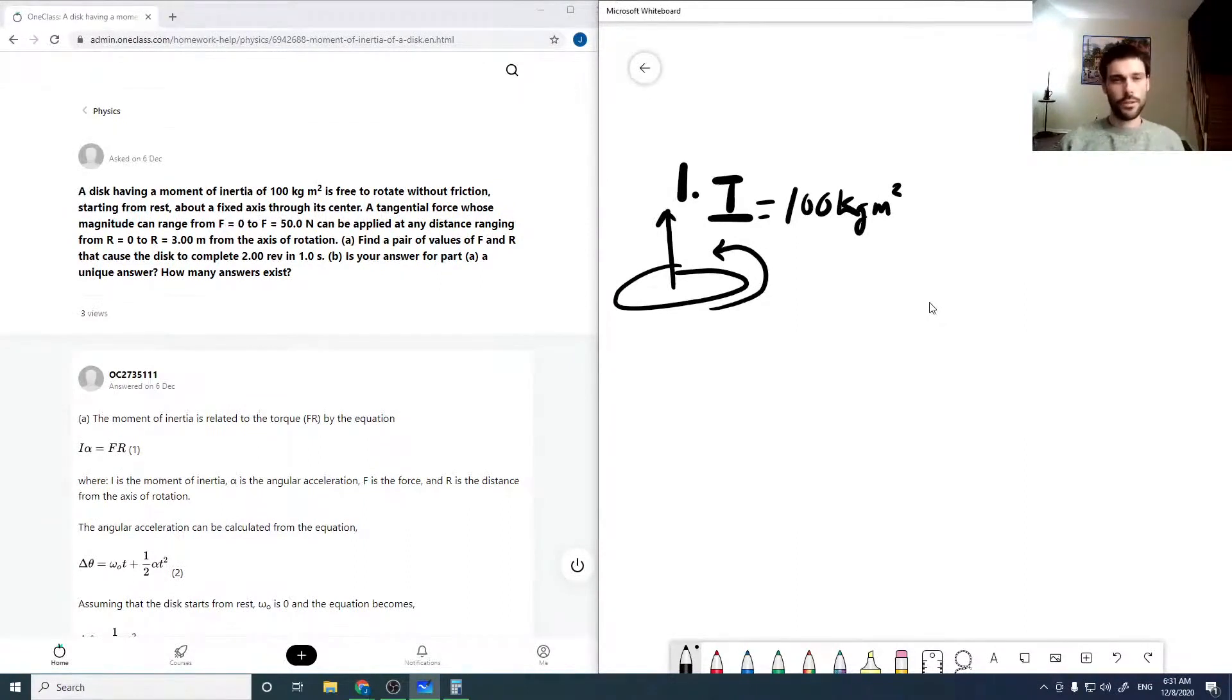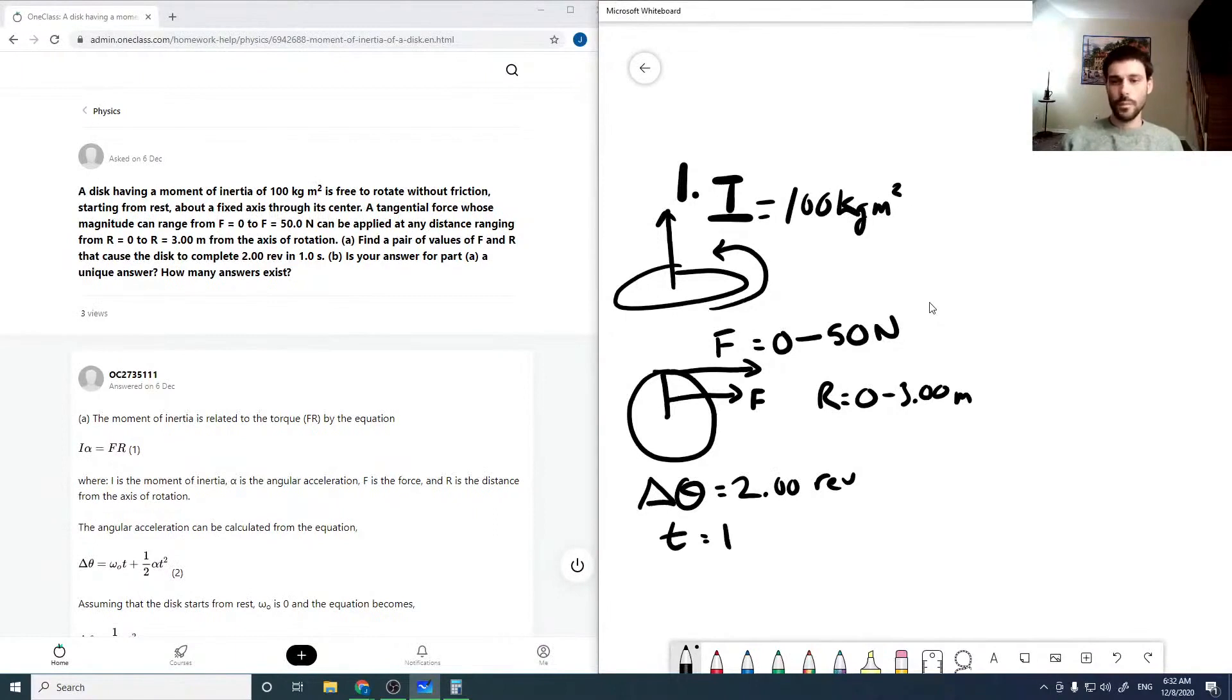We have some tangential force which can act and the force can take on anywhere between 0 to 50 newtons, and it can be applied anywhere between 0 to 3 meters. So we can apply the force anywhere we want along the radius of the disc. And we need to find a pair of values such that we move a delta theta equals two revolutions in a time of one second.